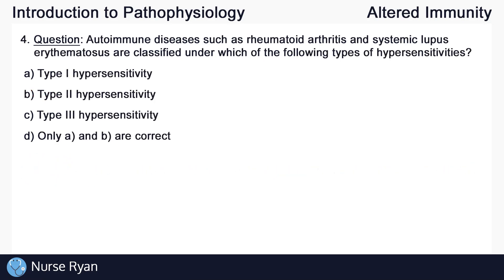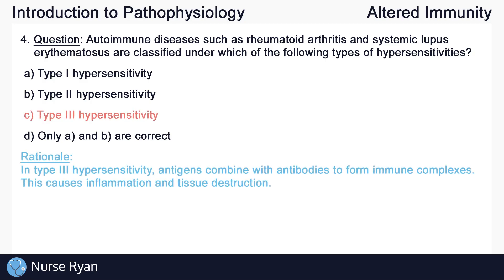Question number four: autoimmune diseases such as rheumatoid arthritis and systemic lupus erythematosus are classified under which of the following types of hypersensitivities? This one is C, type 3 hypersensitivity. In type 3 hypersensitivity, antigens combine with antibodies to form immune complexes. This causes inflammation and tissue destruction.